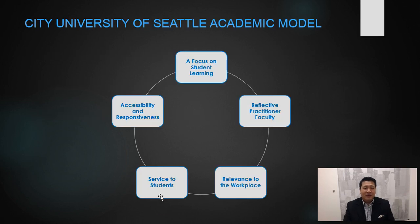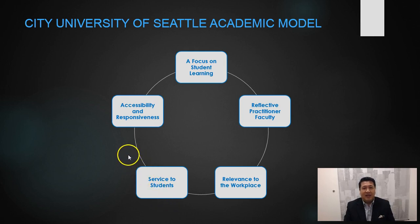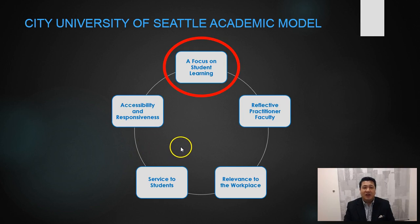Here at City University of Seattle, our academic model is comprised of five distinct elements, and today we're going to explore this one: a focus on student learning.